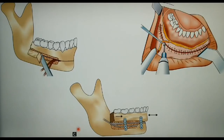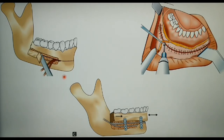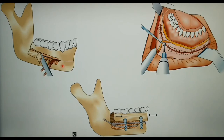Like any other mandibular orthognathic surgical procedure, the basic principle here is to reflect the buccal mucoperiosteum down to the inferior border, taking care not to injure the mental nerve. The lingual periosteum is also elevated without damage. The first step is to remove the buccal cortical plate just behind the mental foramen.